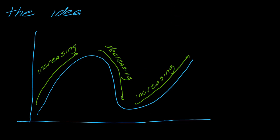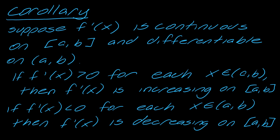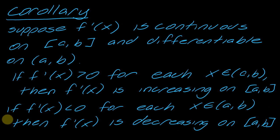Now we need to formalize this intuition and back it up with calculus. I want to start with a corollary that's going to launch this lesson forward — a consequence of the mean value theorem. Suppose f prime is continuous on the closed interval from a to b and differentiable on the interior. If f prime of x is greater than zero for each x in that interval, then f is increasing. If f prime is less than zero for each x in the interval, then f is decreasing on that interval. Write this down and think about what these things mean in the simplest terms possible.